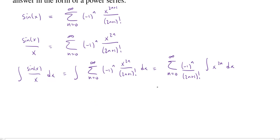This is going to be very easy because we know that an anti-derivative for x to the 2n is going to be x to the 2n plus 1 over 2n plus 1. And so our power series anti-derivative will be sum from 0 to infinity, the alternator over 2n plus 1 factorial times x to the 2n plus 1 over 2n plus 1. There we go. We found an anti-derivative for sine of x over x.